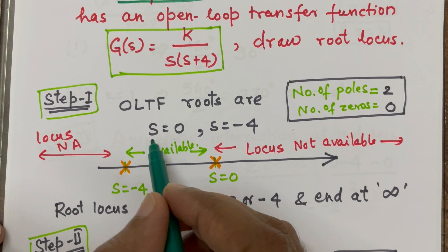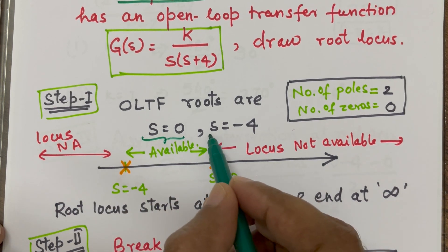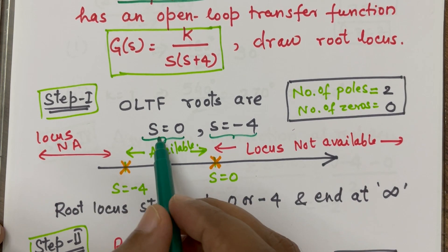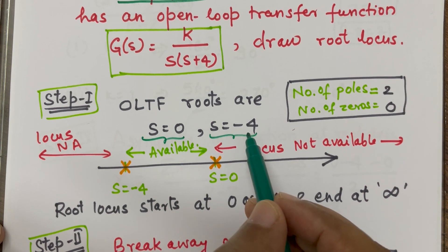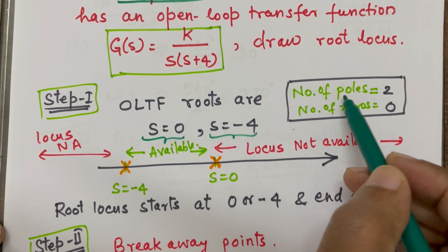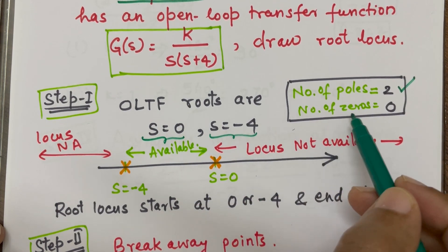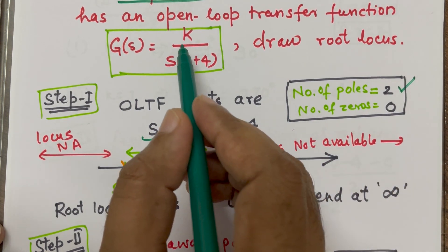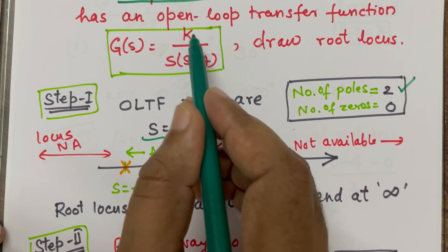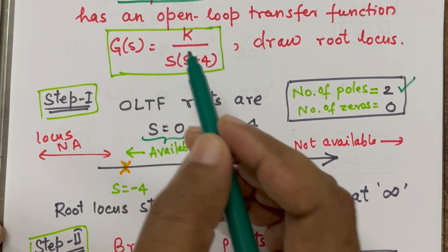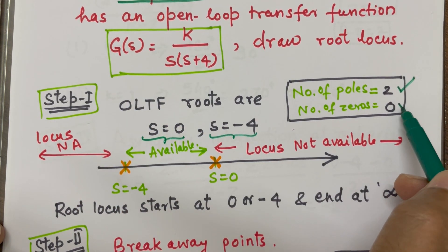So, there are two roots, which is poles. So, these are 0 and minus 4. And the number of poles is 2, because 1 and 2. Number of zeros, there is no such zeros for which this entire function will be 0. So, number of zeros are 0.